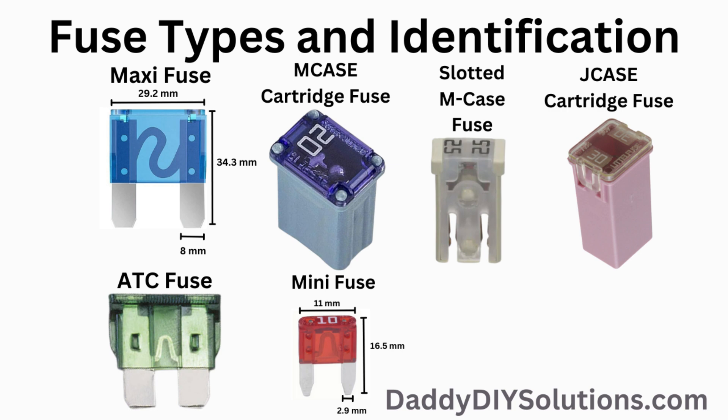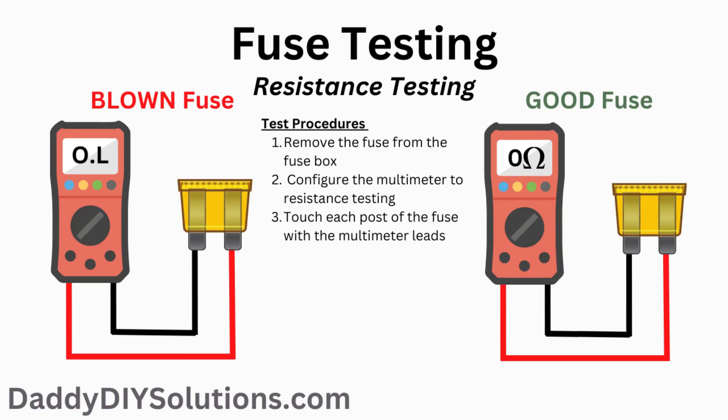Next, we'll show you how to use a multimeter to test the fuse. This is how you perform a resistance test using a digital multimeter. First, set your multimeter to resistance mode. Second, after making sure your test probes are in the correct ports and verifying your tool is configured correctly, touch one of your leads to one side of the fuse and touch your other lead to the other side of the fuse.